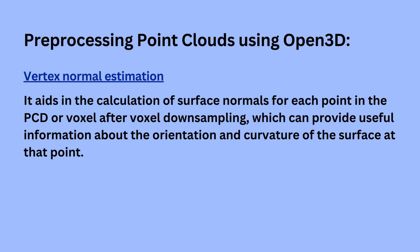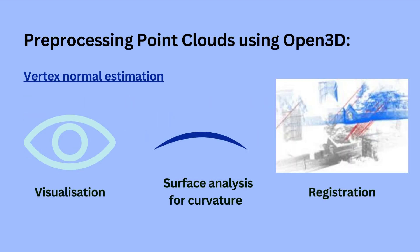Another common technique used after pre-processing steps such as downsampling and denoising is vertex normal estimation, which is very important because it aids in the calculation of surface normals for each point in the point cloud data. This can provide useful information about the orientation and curvature of a surface at a specific point, and is useful for many applications like visualization, surface analysis, and registration — where surface normals can help align and register multiple point clouds together by matching their orientation at corresponding points.